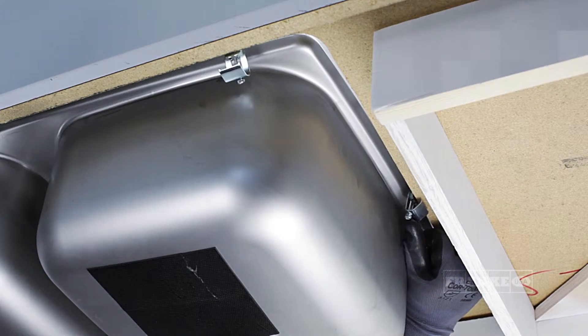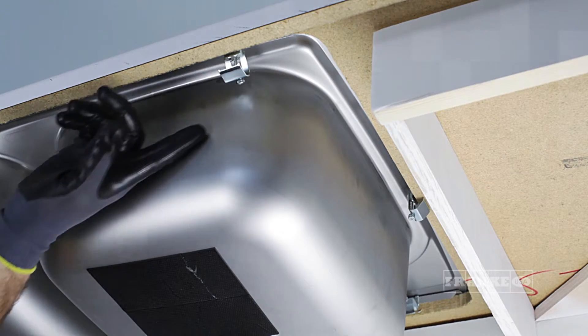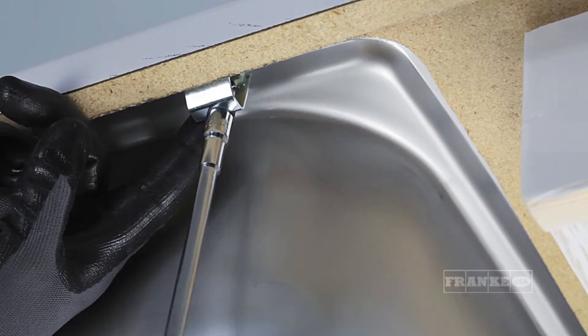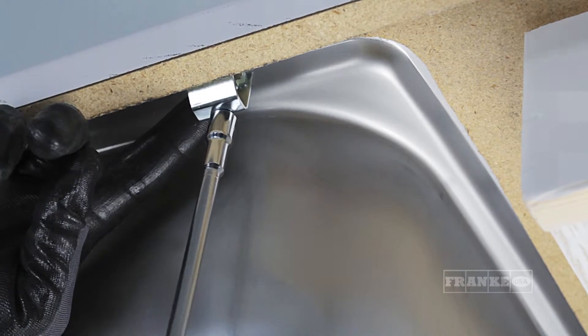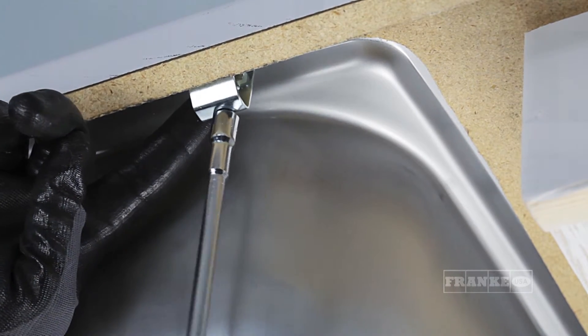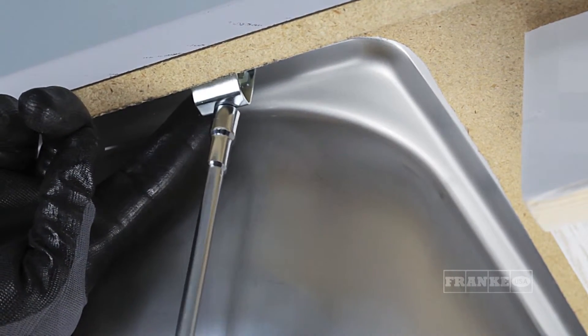Once the sink is properly aligned, return the sink clips to their original position for tightening. Begin tightening the sink clips underneath the countertop with a hex nut driver or screwdriver in an even fashion, alternating sides while tightening until the entire rim is sealed.